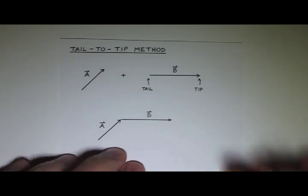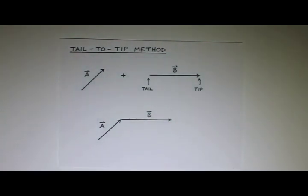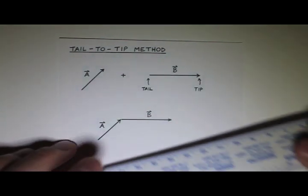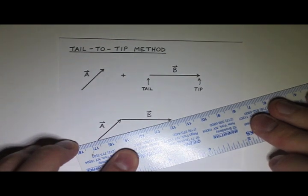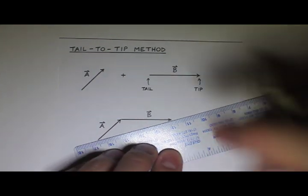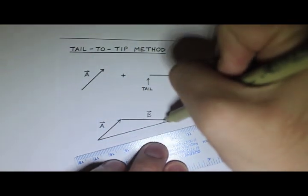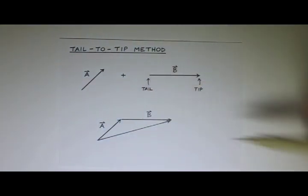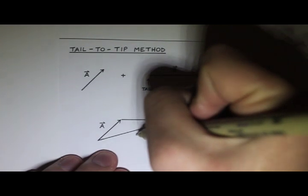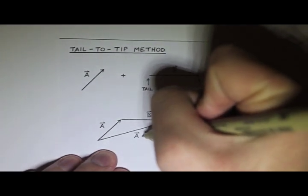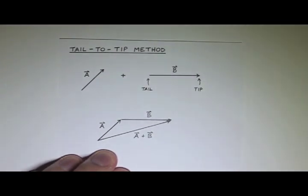If I want to find the sum of A and B, I draw the vector from the tail of A to the tip of B. So you start all the way at the tail of A, and go up to the tip of B, and put the arrow at the end of that vector. And this is the vector A plus B. This is the sum of the two vectors.